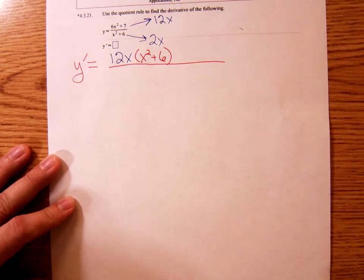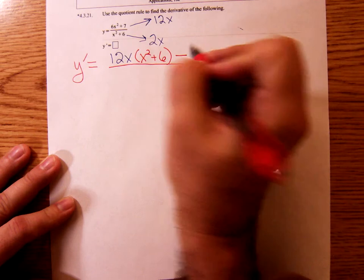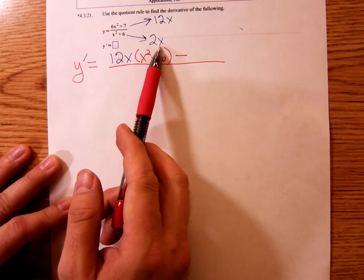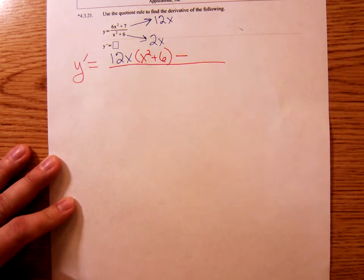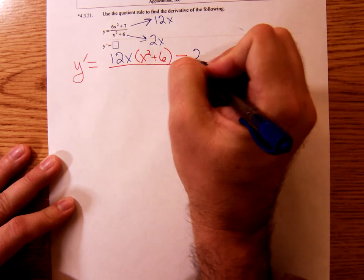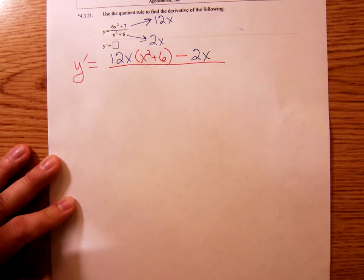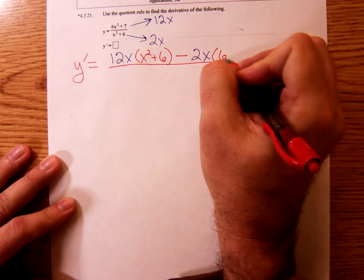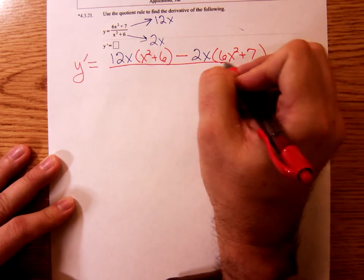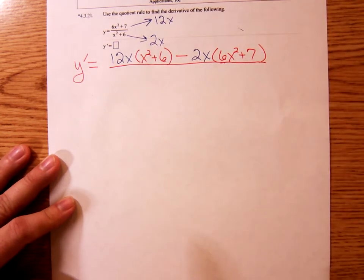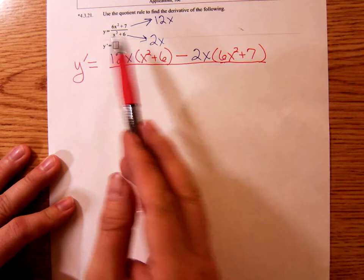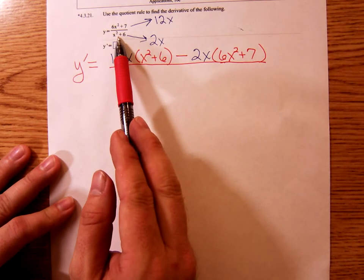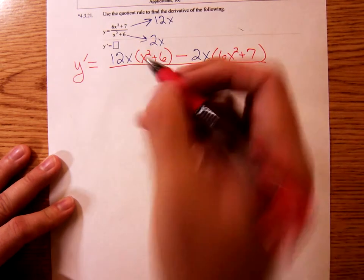Minus the derivative of the denominator. The derivative of the denominator is just that two x times the numerator. The numerator is six x squared plus seven. In the denominator, we have the original denominator, x squared plus six, quantity squared.